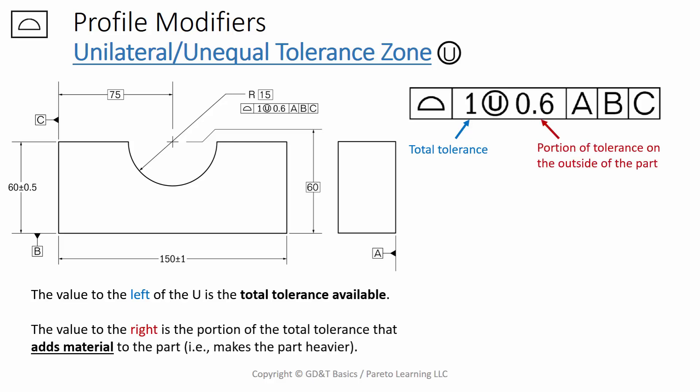The value to the right of the U is the portion of the total tolerance that adds material to the part. It's what makes the part heavier.